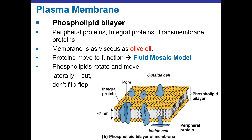The phospholipids themselves can rotate and move laterally and spin around in place, but they can't flip-flop. The polar heads to the outside of the cell are different than the polar heads to the inside. So the membrane always maintains that polarity of what's the outer boundary and what's the inner boundary.